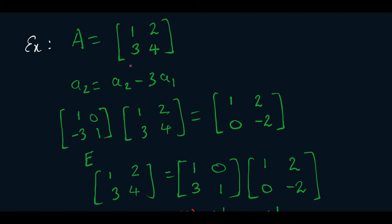Here our A is [1,2;3,4]. First we will make this 3 as 0, so our first operation will be A2 equals A2 minus 3A1. Then our elimination matrix will be [1,0;-3,1]. This will be our U matrix.